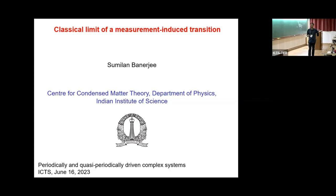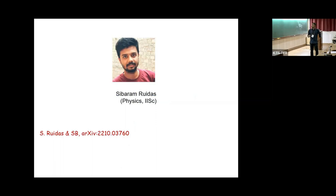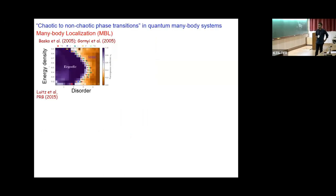I will discuss a quantum model which might have this measurement-induced transition, but we are not going to study it in the quantum limit. It will ultimately be a classical calculation, but I will try to motivate it from a quantum limit. Some of you might have heard this talk, so sorry to bore you again. All the work has been done by Shibram, and you can find the details in this paper.